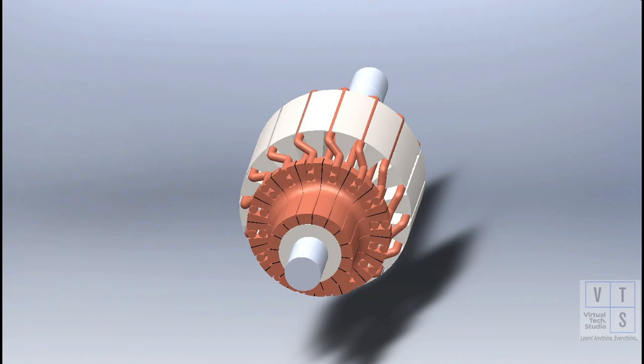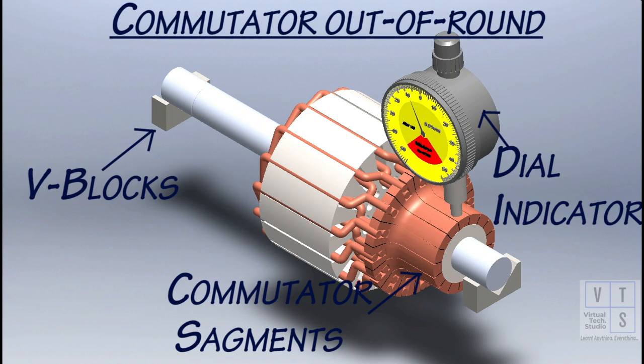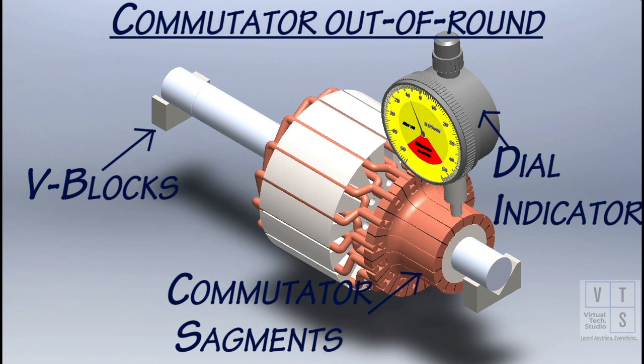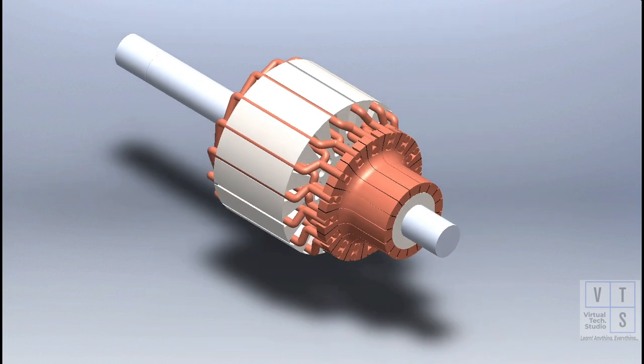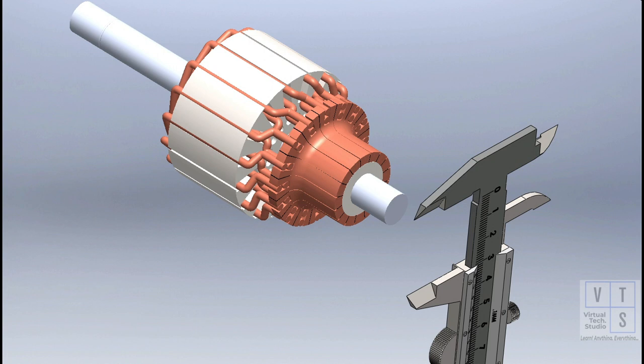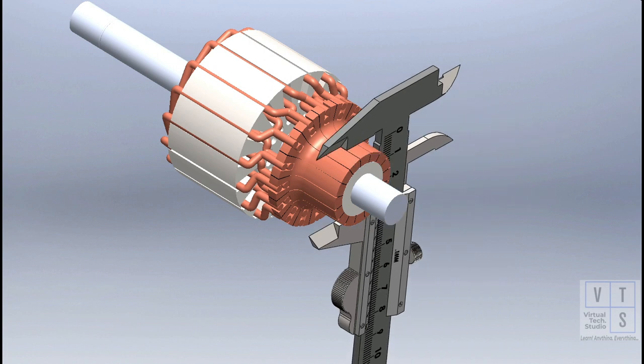Check commutator for run out with armature supported on V-blocks and compare out of round value with the manufacturer recommendations. Correct it by using lathe if required. Check for wear and replace armature if diameter is below the prescribed manufacturer limit.